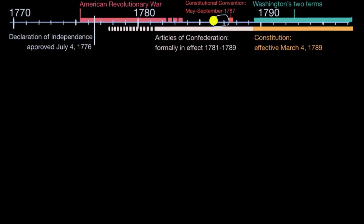So you can imagine these poor farmers who were kind of the bottom of this food chain were in a pretty tough bind. They had fought in the Revolutionary War, they had risked their lives, many of them had been injured, but they actually did not get paid for their service to a large degree. And then now they were not able to even survive as farmers because not only were they not able to borrow new funds, but some of their existing funds they had to pay back in hard currency, which wasn't available in the United States.